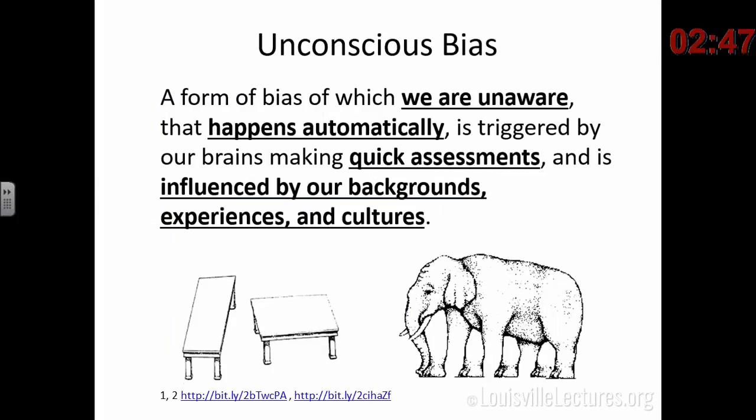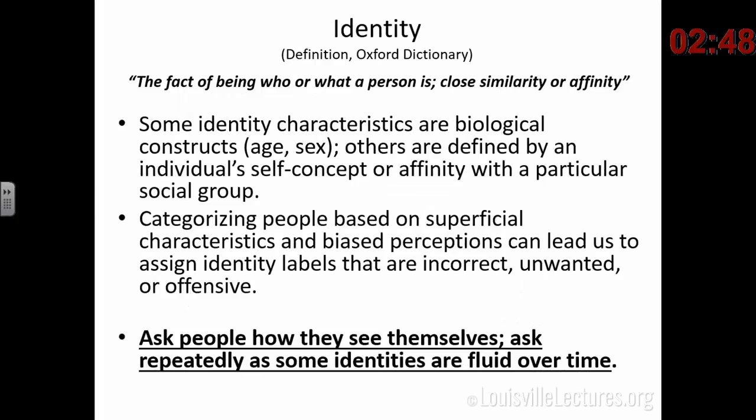A quick word about unconscious bias: this is a form of bias of which we're not aware. It happens automatically — we make quick assessments. It's a fight-or-flight kind of reaction: put something in a category super quick. If it looks like a tiger coming at you, run. That is the evolutionary reason. It's influenced by our backgrounds, experiences, and cultures. Look at the tabletops — they're actually the same size. And how many legs does the elephant have? These are pictorial examples of unconscious bias.